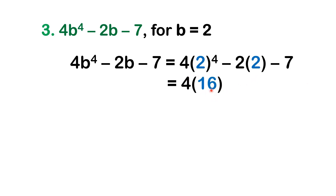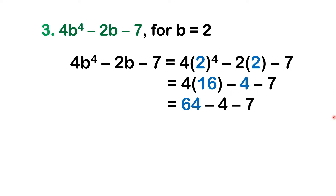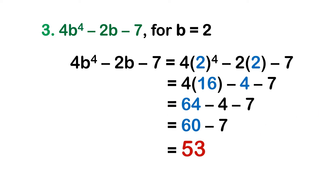Let us solve one by one. Let us start with 4 times 2 raised to the 4th. 2 raised to the 4th means multiply 2 to itself 4 times: 2 times 2 times 2 times 2 gives us positive 16. So now we have 4 times 16. Next, negative 2 times 2 gives us negative 4. Bring down negative 7. 4 times 16 gives us positive 64. Since we only have subtraction, solve from left to right: 64 minus 4 gives us positive 60. Then 60 minus 7 gives us positive 53.